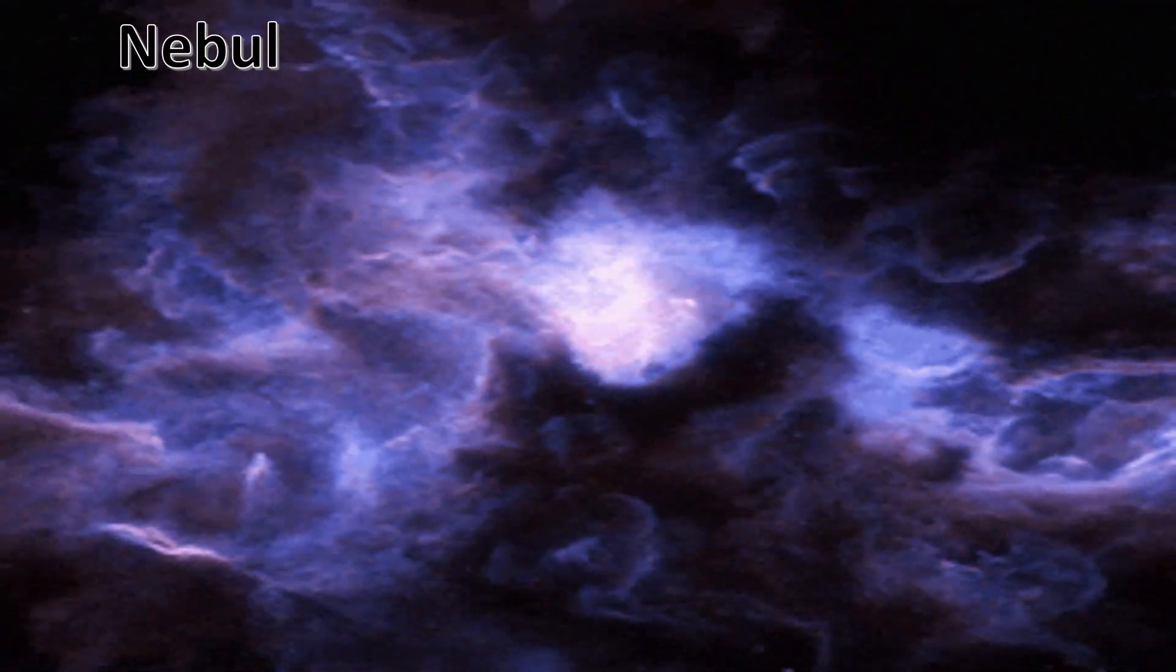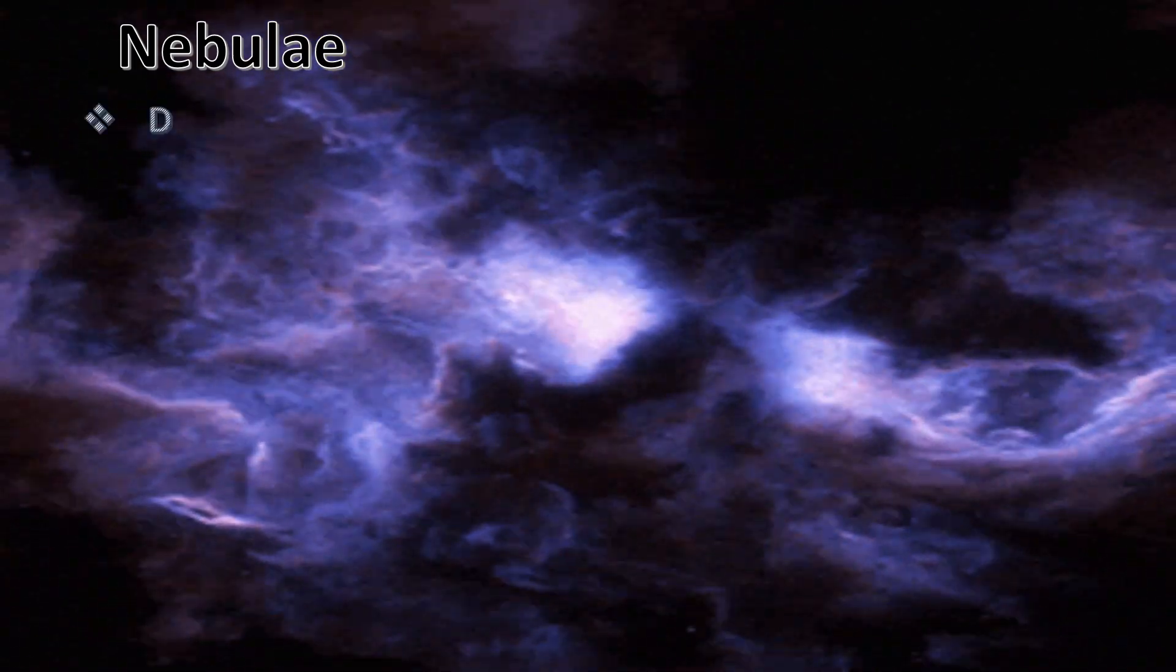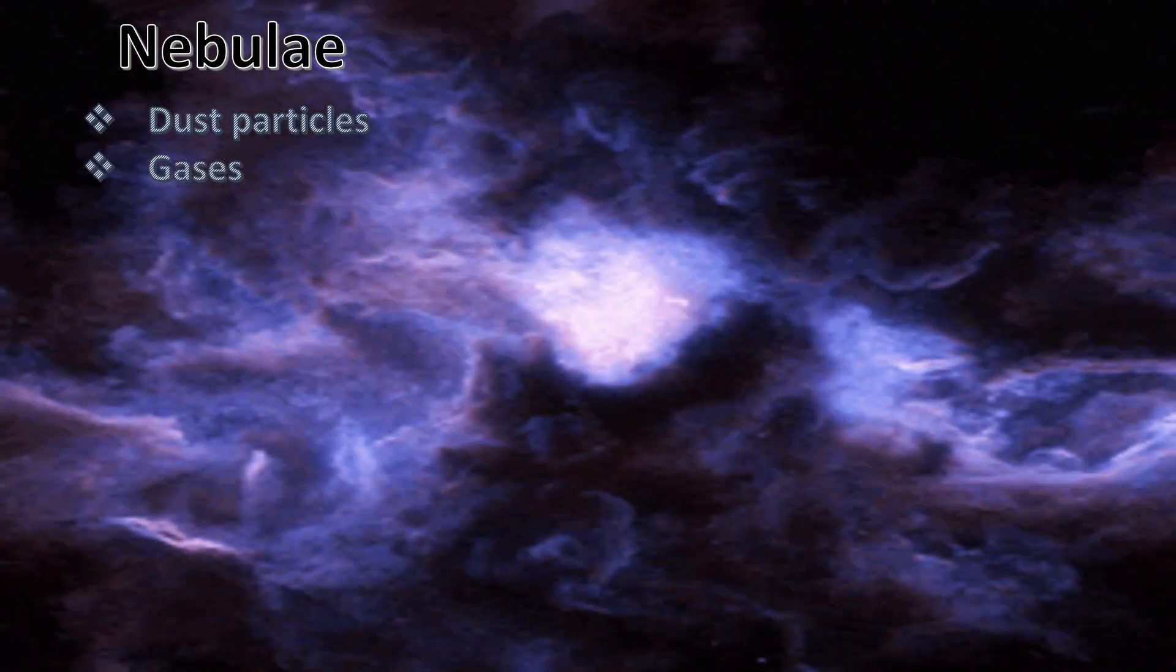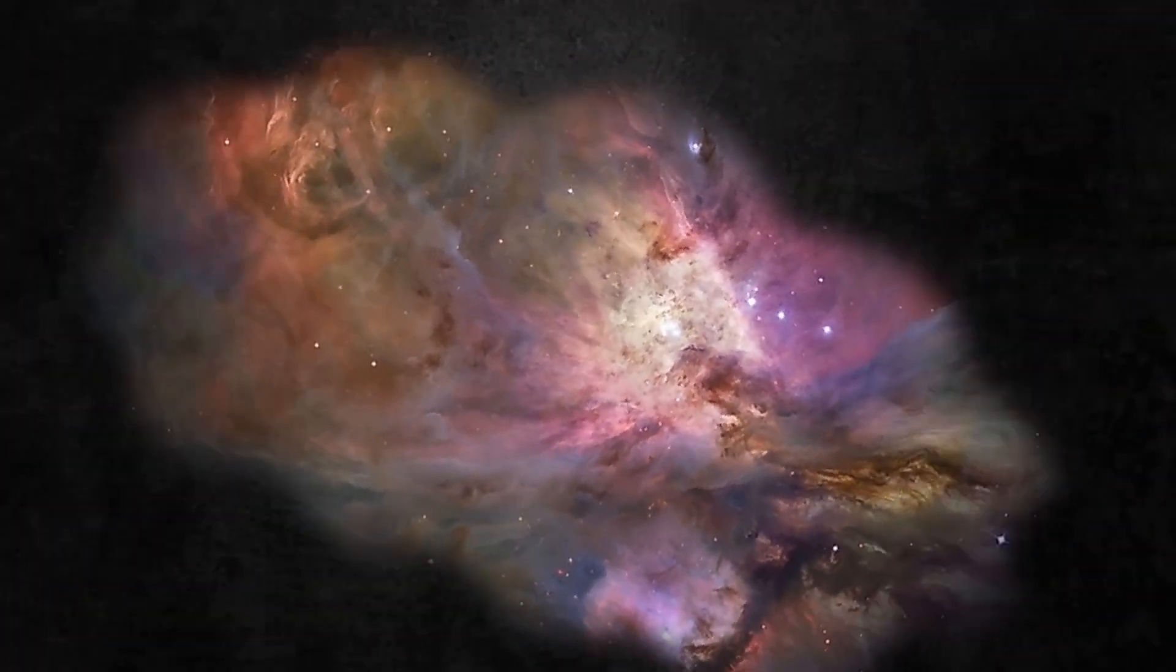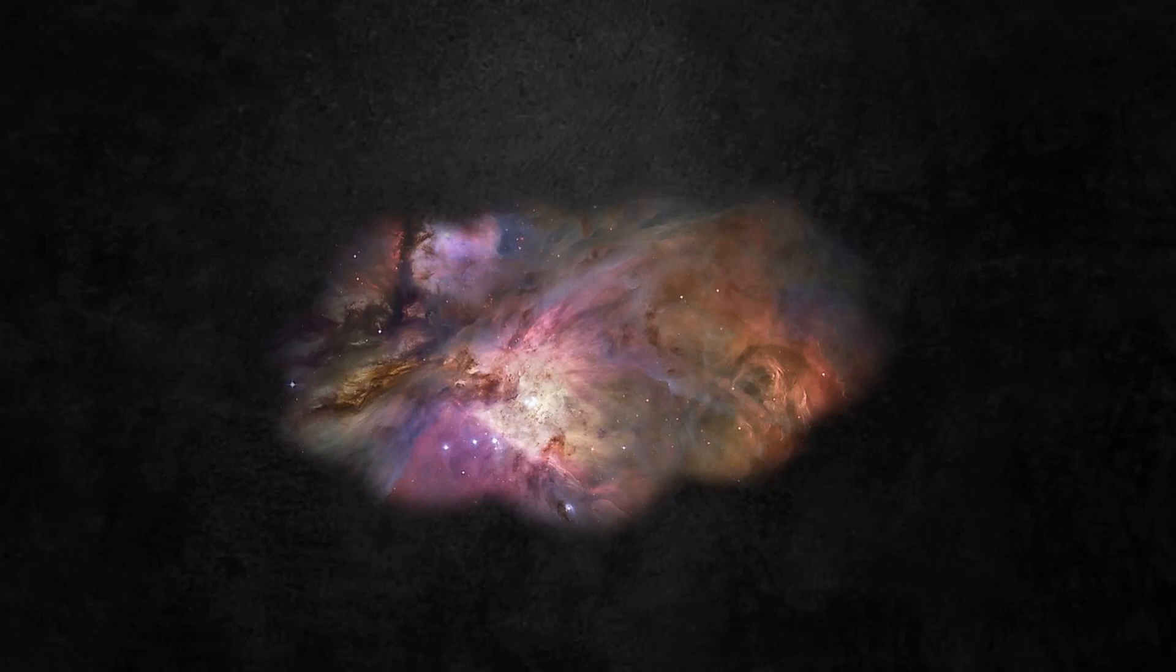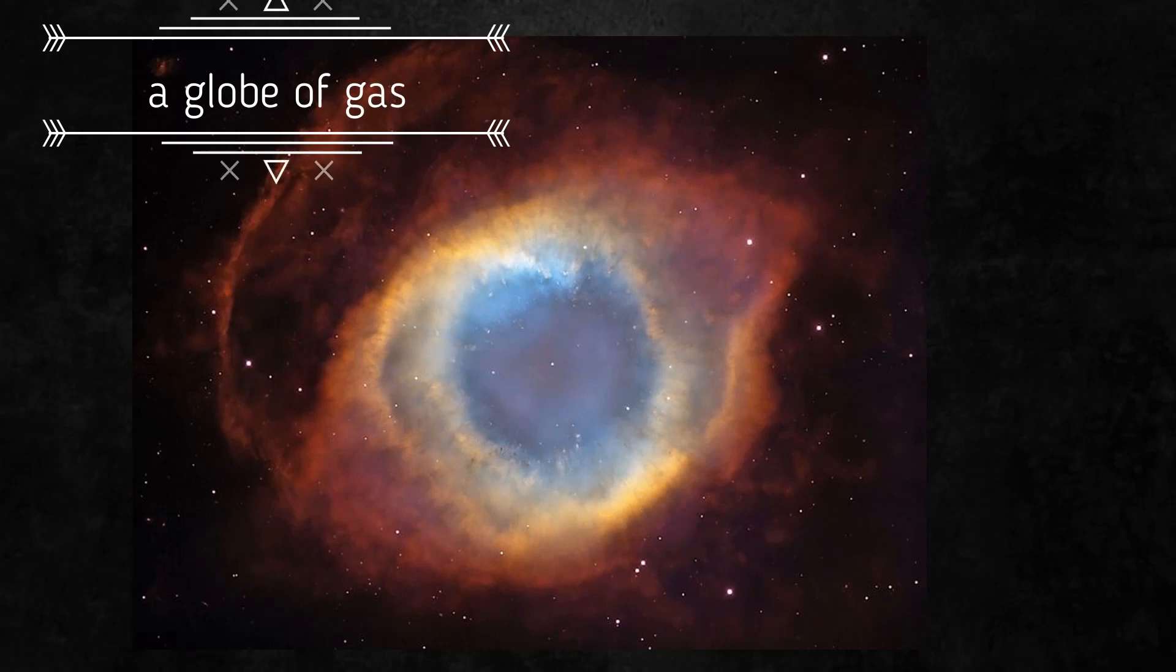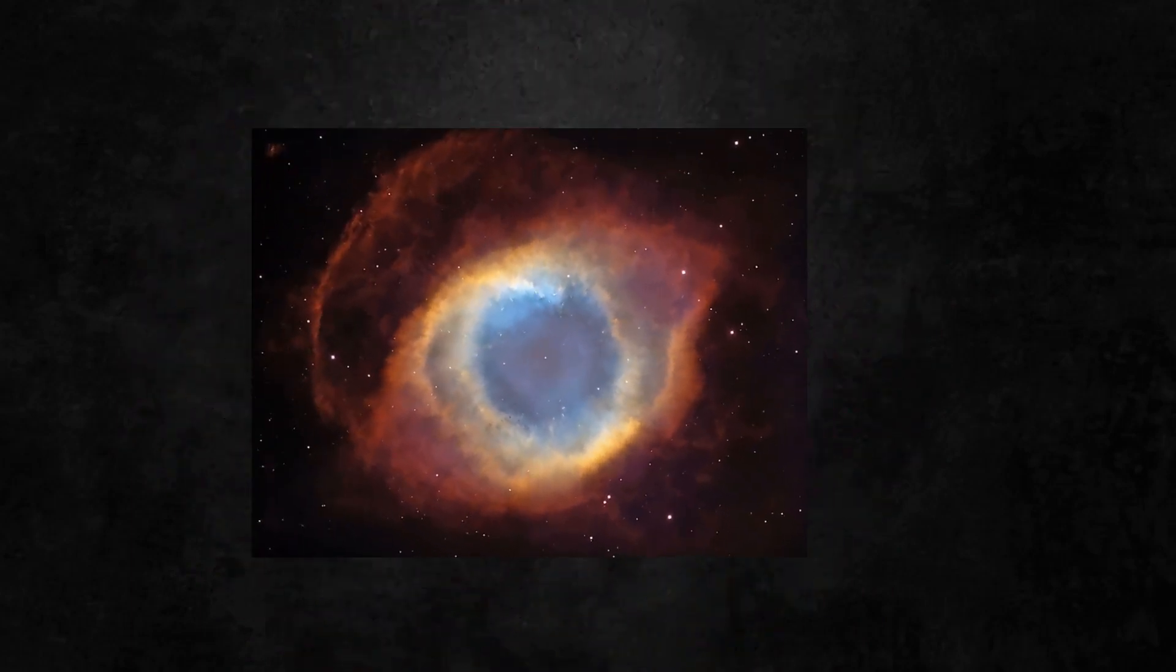All stars are formed from nebulae. Nebulae are large clouds consisting of dust particles and gases such as hydrogen and helium. The gases and dust particles in nebulae are pulled by strong gravitational force and shrink. Finally, it forms a globe of gas. The strong gravitational force causes the globe of gas to shrink and compress until it becomes very dense and forms a core.